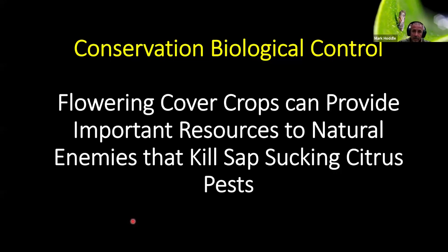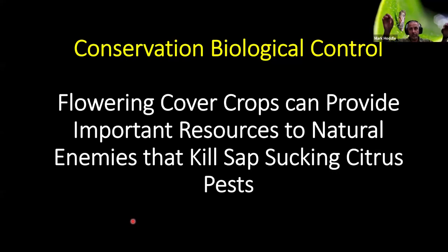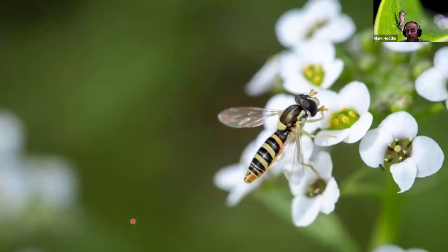Another thing we've done: hoverflies are very important predators of Asian citrus psyllid nymphs, but citrus orchards often lack the flowering resources that these adult flies respond to strongly. We can increase the impacts of hoverflies by planting small patches of cover crops — especially alyssum — throughout the orchard. Alyssum is an extremely attractive plant to hoverflies. The females come in to feed on the flowers, get the nectar and pollen they need, then leave the cover crop patches and look for patches of Asian citrus psyllid nymphs. When they locate those, they lay their eggs in those patches. Here's a hoverfly sitting on an alyssum flower.